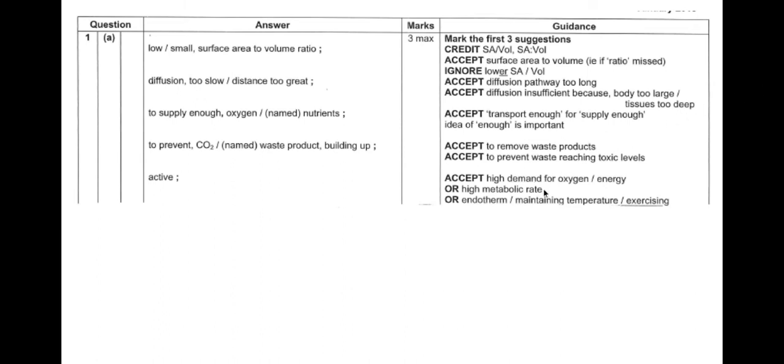Here is the high metabolic rate mark on this side. It's very popular on the new specification. Make sure you're adding that bit in. And as you can see, we need to be making sure that we are using comparable statements. So higher, lower, this has more than this. Make sure it's really obvious to the examiner that you are stating which organism you're talking about.